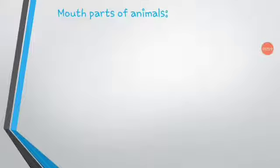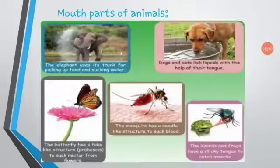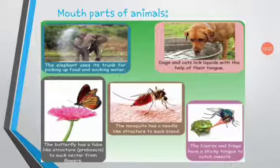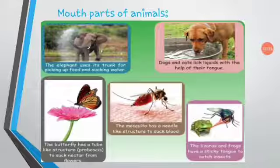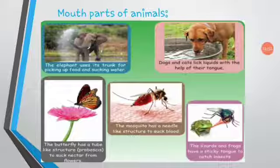Mouth parts are different parts of the mouth that are adapted based on the nature of the food that the animal eats. The first animal is elephant. Elephant uses its trunk for picking up food and sucking water. Dogs and cats lick liquid with the help of their tongue. Next, butterfly — they have a tube-like structure, like a straw, and they suck the nectar from flowers. Mosquito have a needle-shaped mouth structure to suck blood. Lizard and frog have a sticky tongue to catch insects. So every animal uses their mouth parts in a different way.